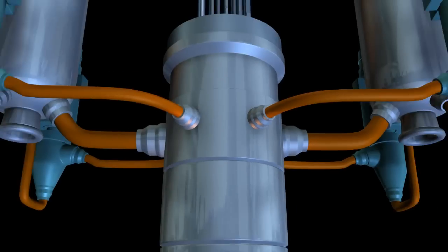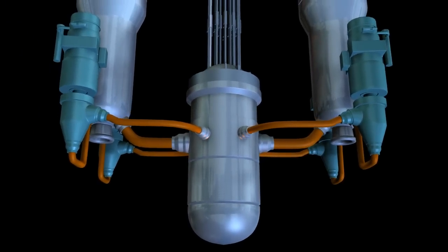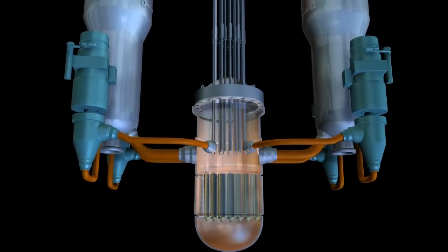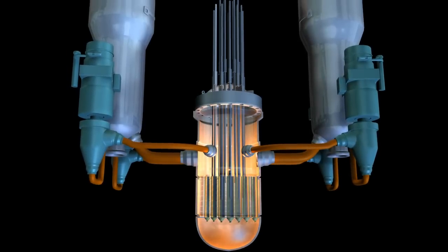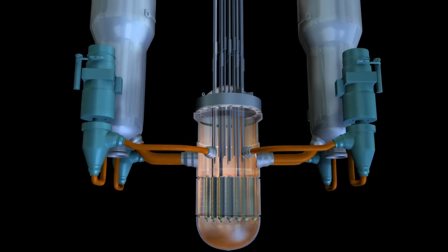These additional neutrons then collide with other uranium atoms, creating more reactions, a controlled chain reaction. This process generates a vast and steady supply of heat.